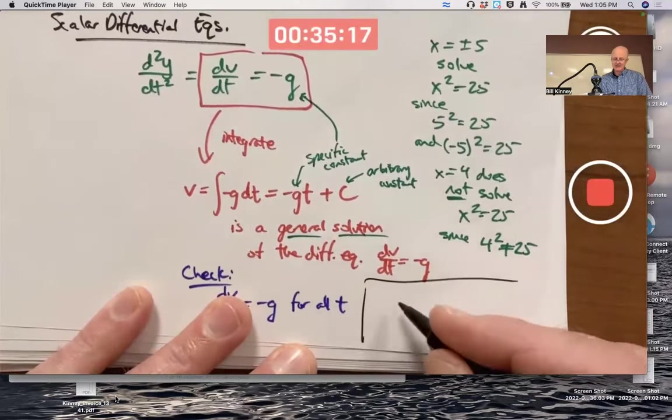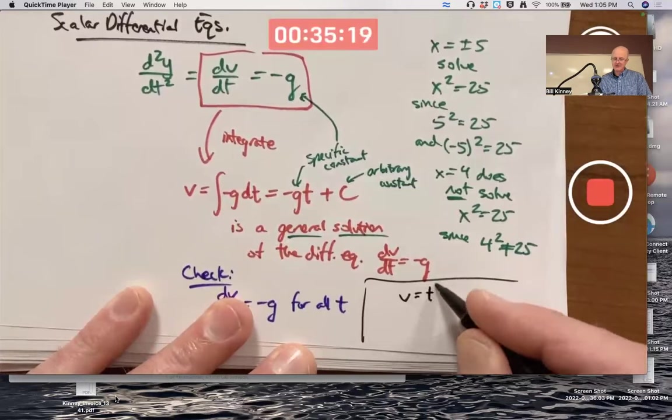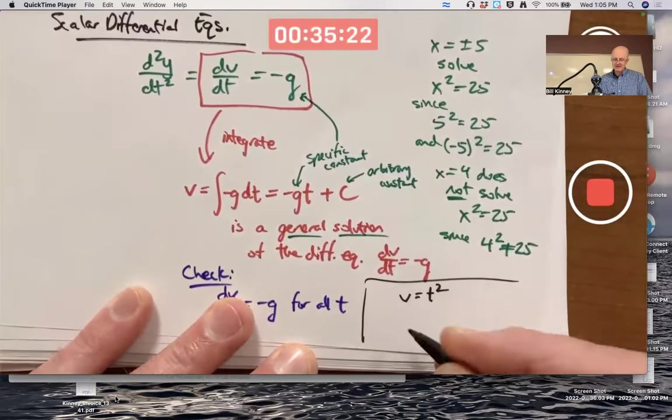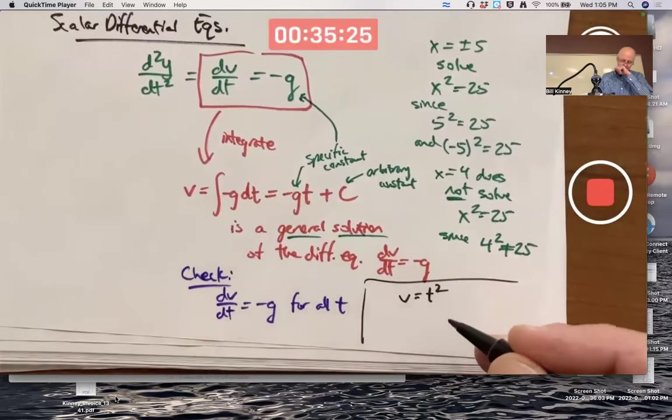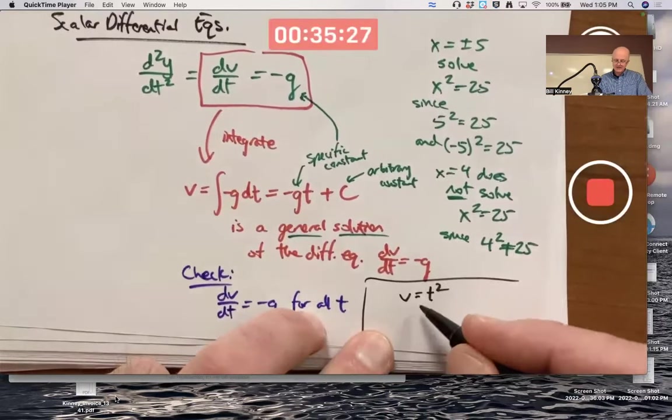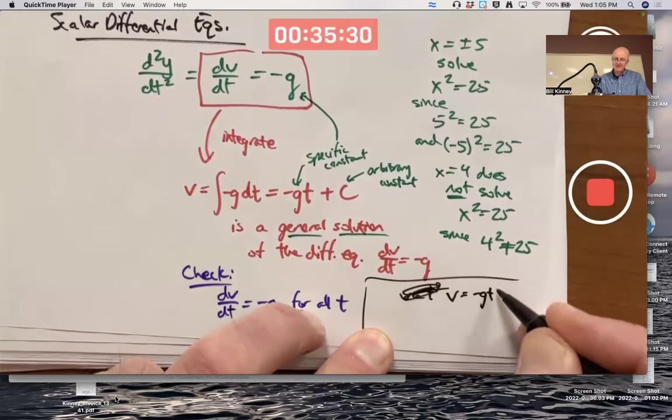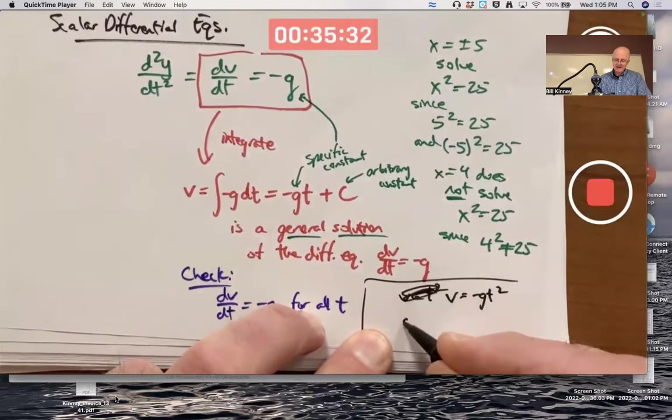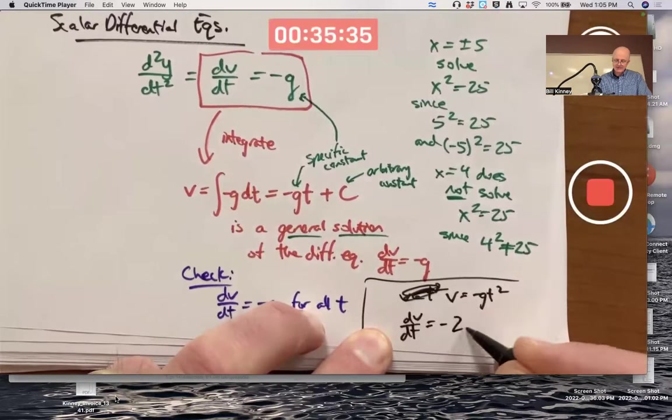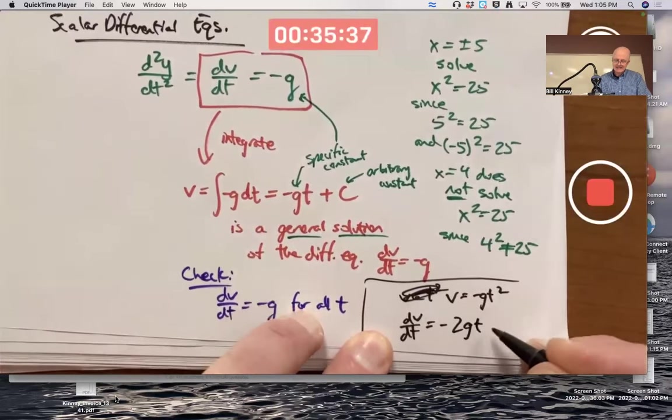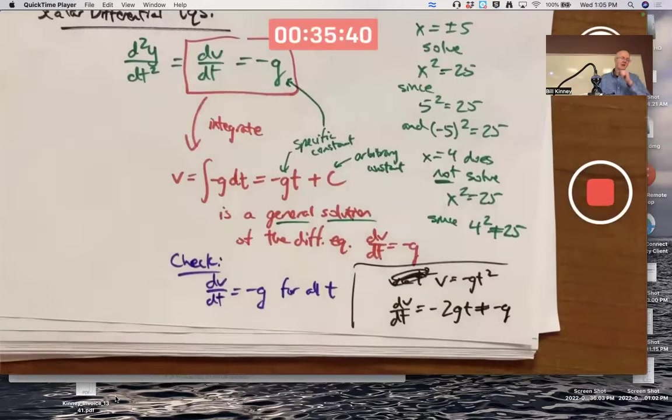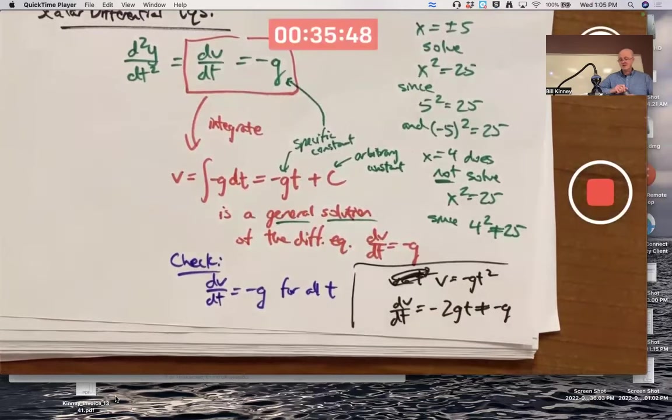Some other function like V equals T squared or something will not work. Even negative GT squared doesn't work. Why? Its derivative is negative 2GT, not equal to negative G as a function of T. They would be equal if T is one half, but I would want them to be equal no matter what T is. And they're not.